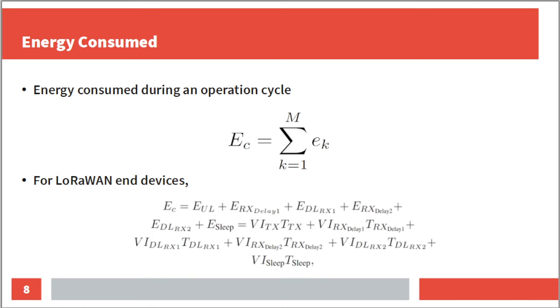It has been found in several works that, in general, the energy consumed during an operation cycle can be described according to this equation in which the total operating cycle energy is given by the sum of the energy consumed in each state.